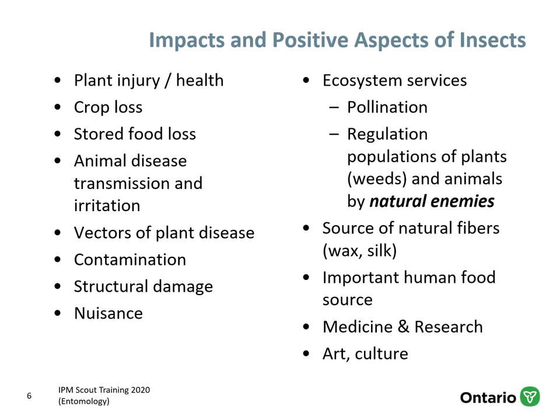Some positive elements include ecosystem services like pollination — many foods we enjoy result from insect pollination. They can also help regulate populations of plant pests including other insects or weeds, which is important for natural enemies and biological control. They provide natural fibers like wax and silk, and of course honey. Insects are also an important food source in other parts of the world, are incredibly important in medicine and research, and insects in art and culture date back thousands of years. It's important to realize they're much more than pests.